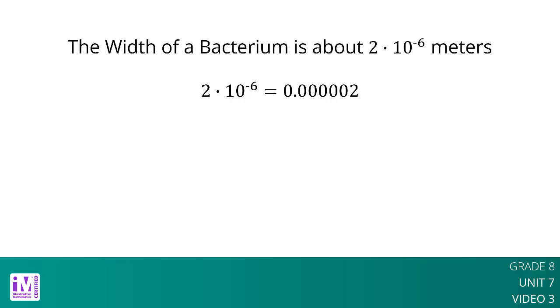Now let's consider very small numbers. The width of a bacterium cell is about 2 times 10 to the negative sixth power meters. If we want to plot this on a number line, we need to find which two powers of 10 it lies between.